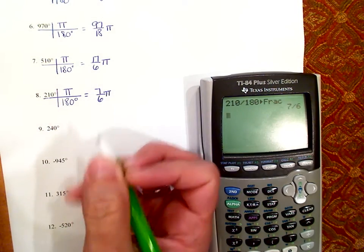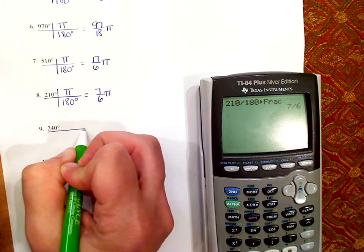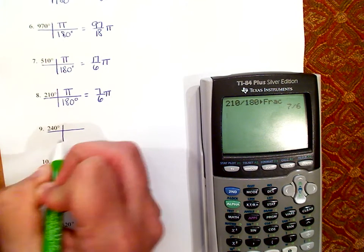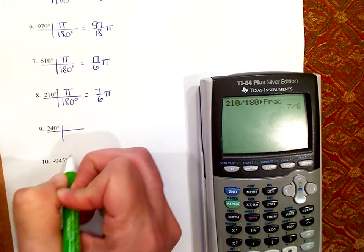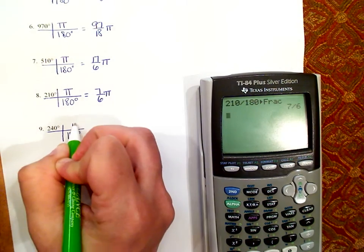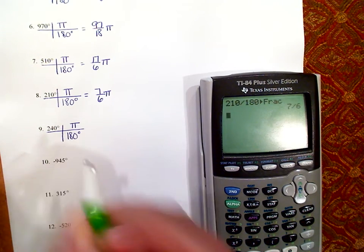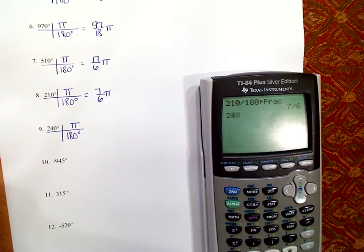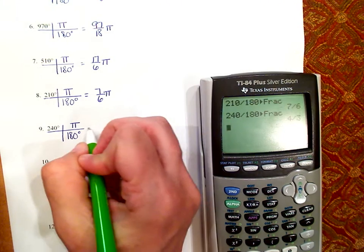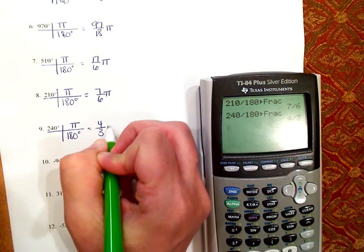Number 9 — 240 degrees. Degrees is on top, so we put degrees on the bottom, pi on top, the degrees cancel. So 240 divided by 180, math, enter, enter — is 4 thirds pi.